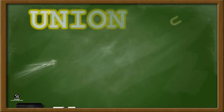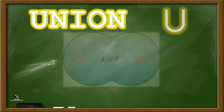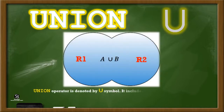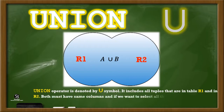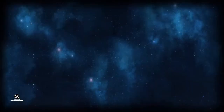Union. The Union operator is denoted by the union symbol. It includes all tuples that are in table R1 and in R2. Both must have the same columns. If you want to select all the tuples from these relations, then we can apply the union operator on them.